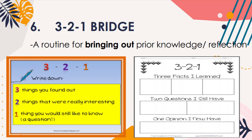In comparing prior and new knowledge, the 3-2-1 Bridge also focuses on understanding and connecting one's thinking rather than pushing it toward a specific outcome. Based on the example, learners are asked to write down three things they found out, two things that were really interesting, and one thing they would still like to know. Or in another example: three facts I learned, two questions I still have in mind, and one opinion I now have.